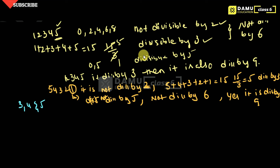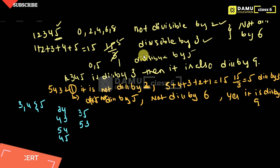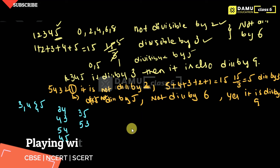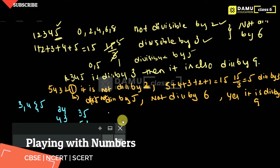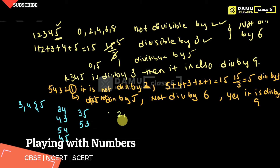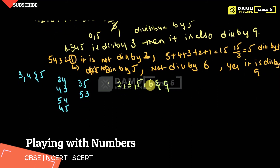So the 2-digit numbers we can make are 34, 43, 54, 45, 35, and 53. All combinations are covered. We have to check each of these numbers for divisibility by 2, 3, 5, 6, and 9.